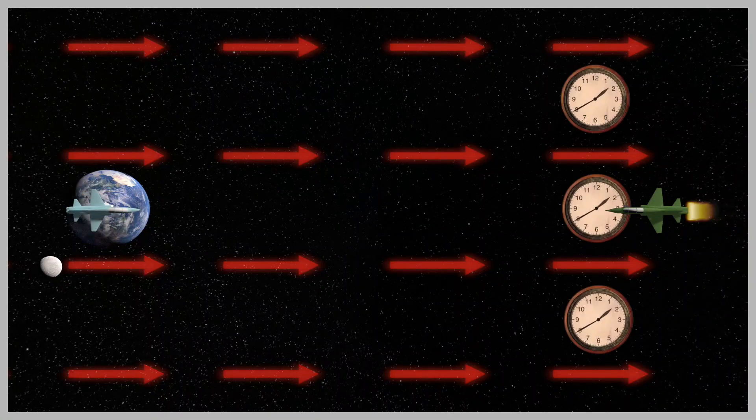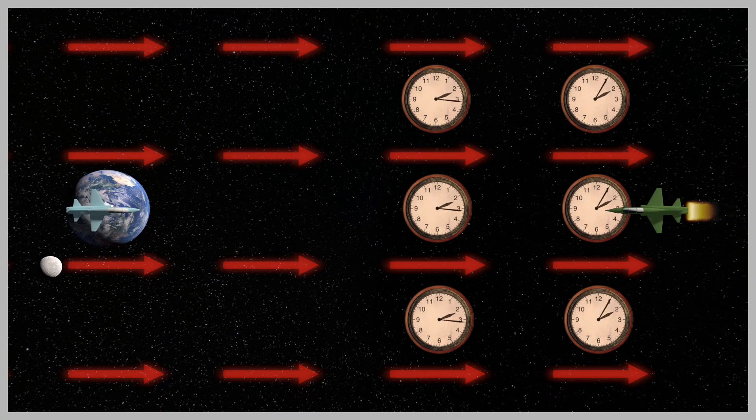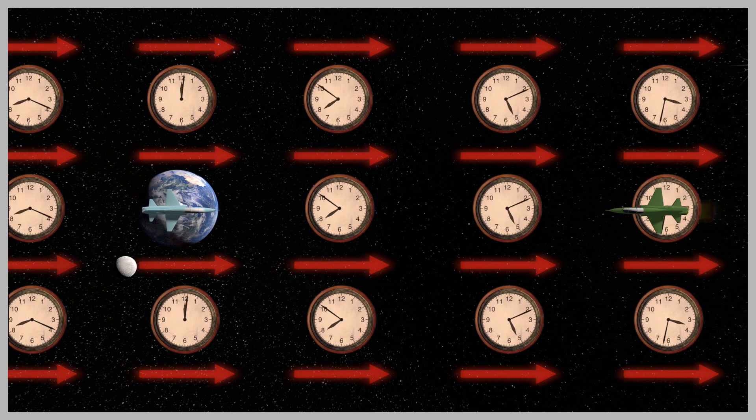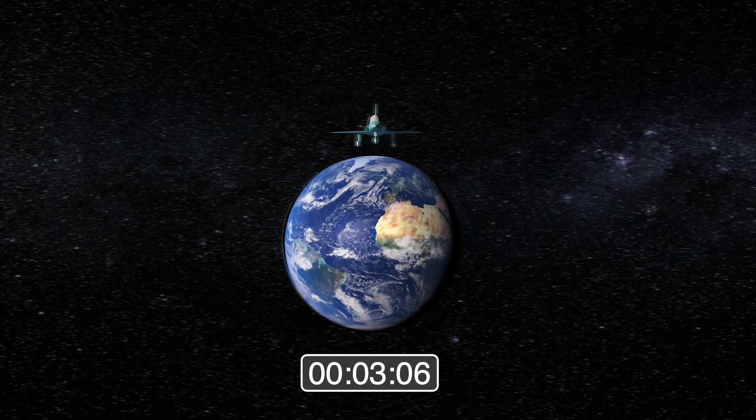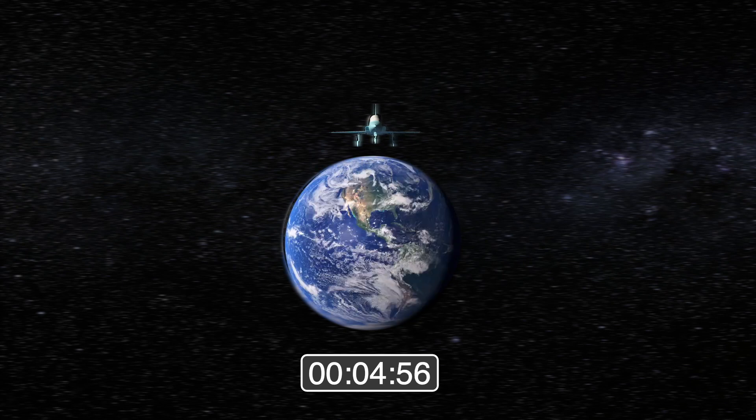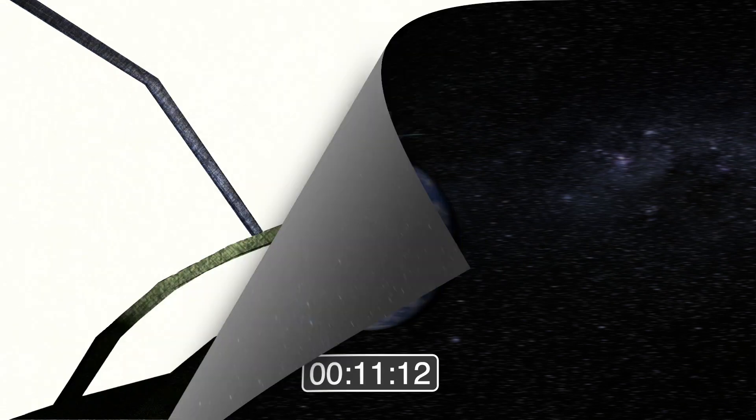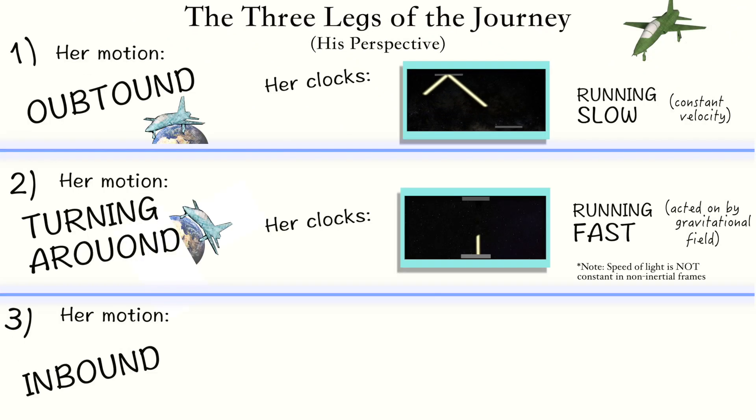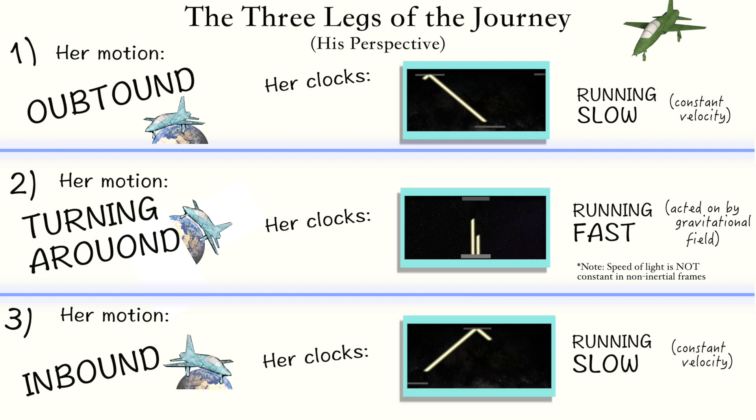Now, because clocks run faster farther out in gravitational fields, distant objects will appear to age very rapidly from his perspective, and thus, by the time he finishes turning around, he will see that his Earth twin has aged through more elapsed time than himself. This rapid aging will be more than enough to compensate for the dilated passage of time he observed for his Earth-bound counterpart during the constant velocity portion of her trip. This is why, when the twins are reunited, they both will agree that the Earth twin is older.